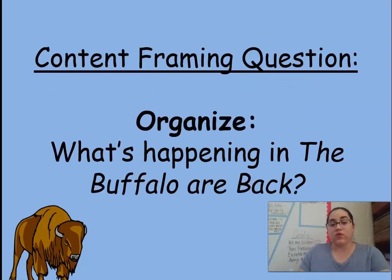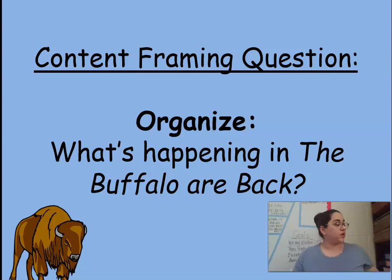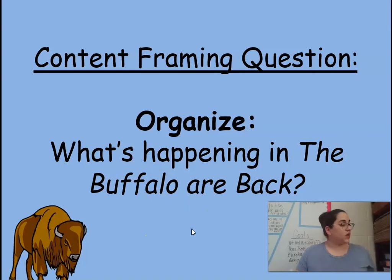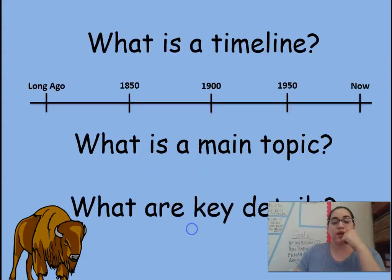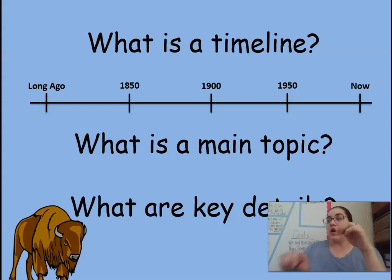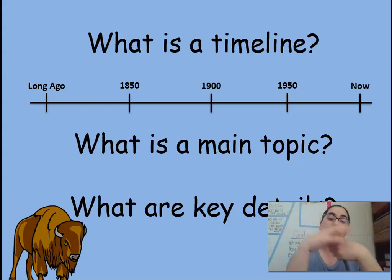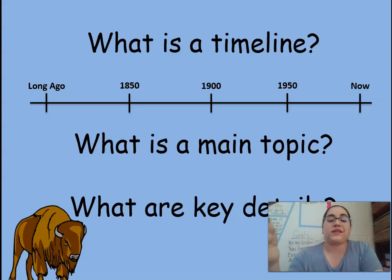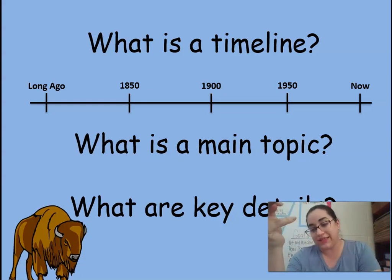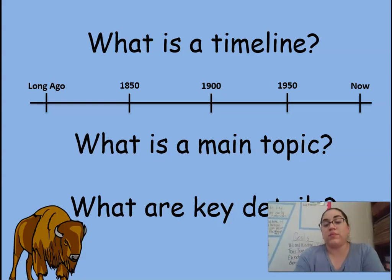Those were the two vocabulary words: Bison and Plains. Now we're going to go into our content framing question and look at what is happening in the book, and how the book helps us define those vocabulary words. Before I continue, I want to explain something we are going to be using in this module — a timeline. We are still brainstorming, Ms. Riliza and myself, on how to present it. But every book we read, we are going to add an event to that timeline. The event must relate to the main idea or key details of the book.